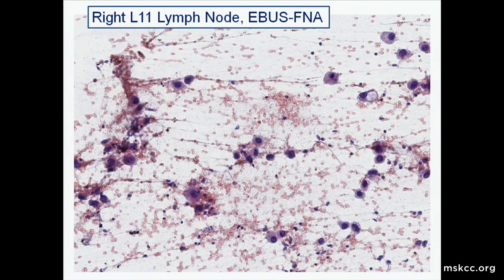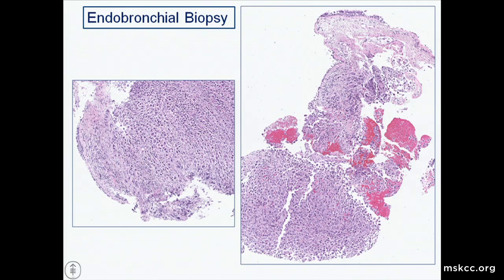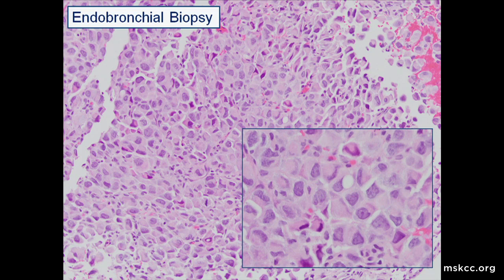The endobronchial biopsy showed a very similar morphology. On high power, you can see that the cells are adhesive and have that same abundant eosinophilic cytoplasm. In some areas, the nuclei are more eccentrically located due to the presence of that cytoplasm.